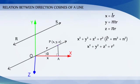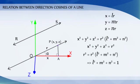But X square plus Y square plus Z square equals R square. Therefore, we get L square plus M square plus N square equals 1. That is, cos square alpha plus cos square beta plus cos square gamma equals 1.